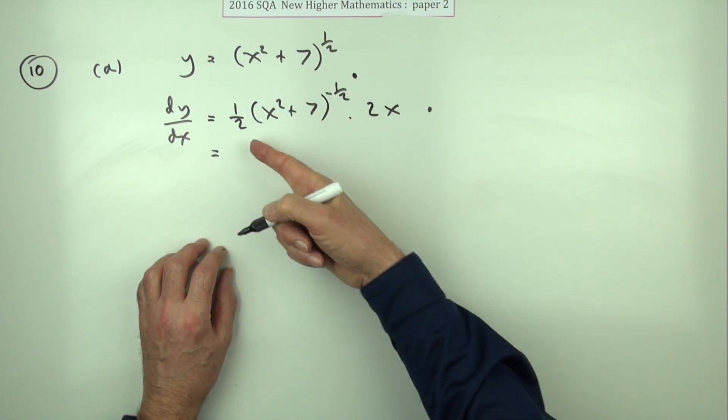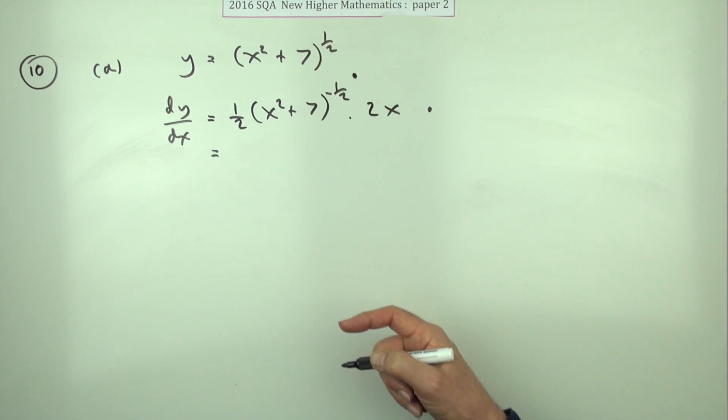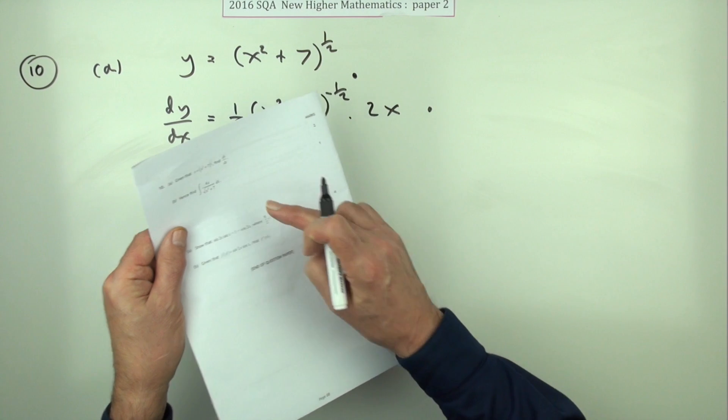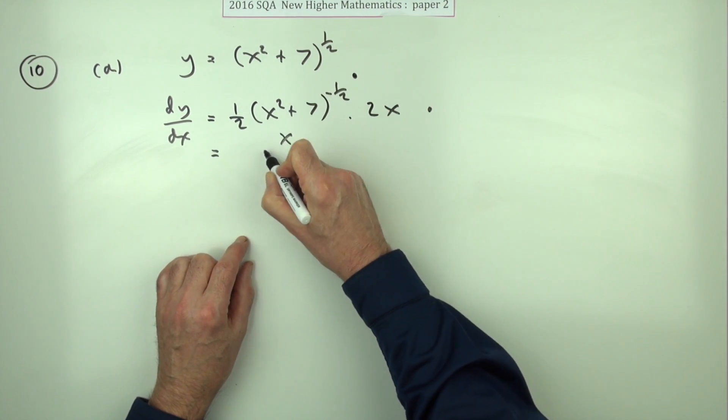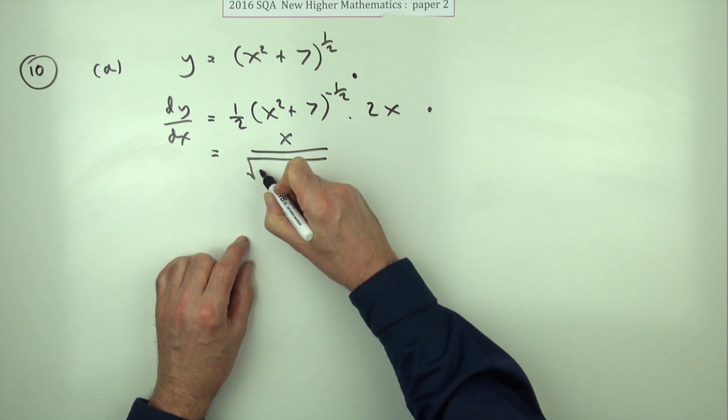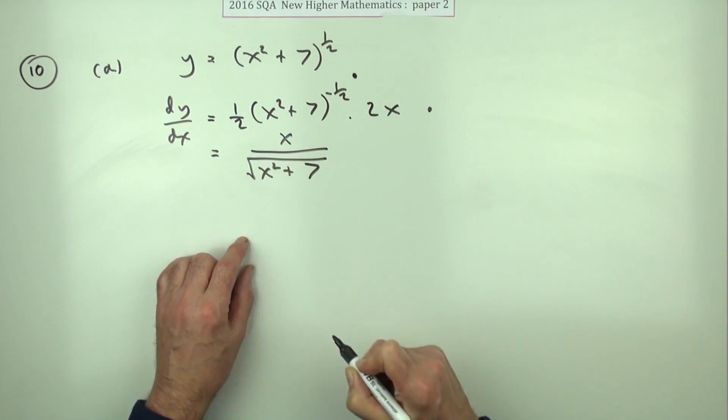Glancing ahead, I'm going to write it in a form similar to part b. So that just becomes x, but that's underneath, so it becomes x over the square root of x squared plus seven.